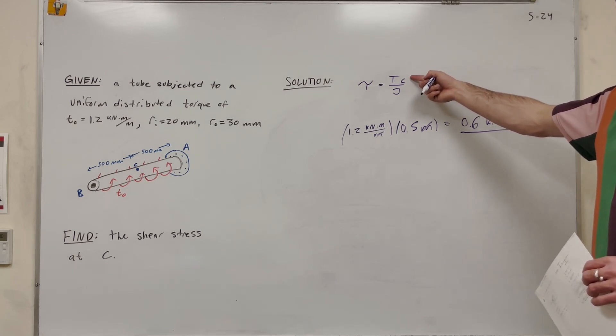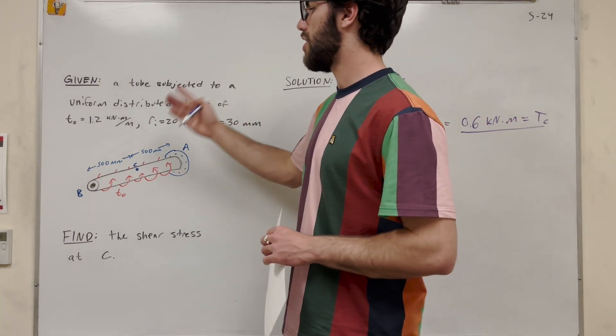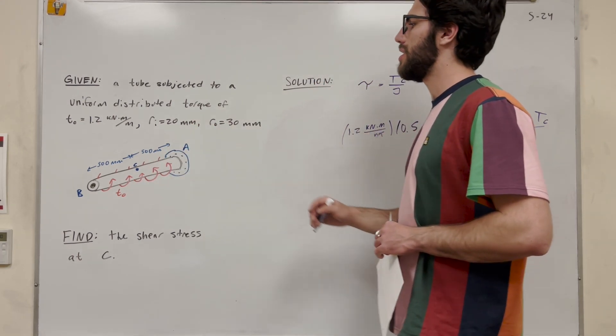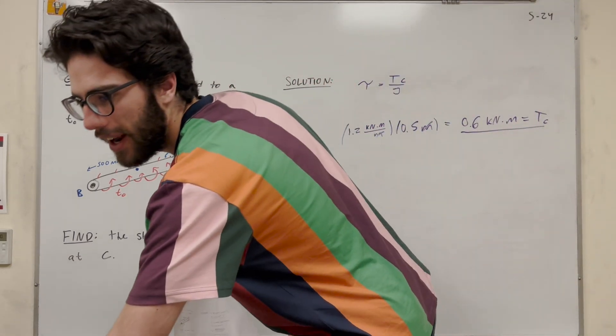So then C is the radius, basically. The radius is the distance from the center of the cross-sectional area to a point. So C lies on the surface. So it's just going to be that outer radius of 30 millimeters. So all we need now is our polar moment of inertia. So let's solve for that.